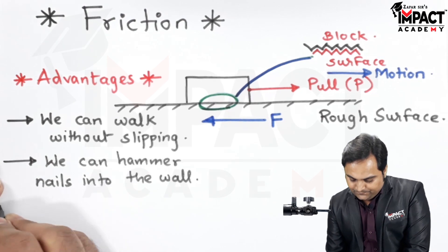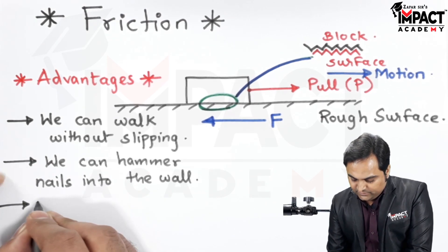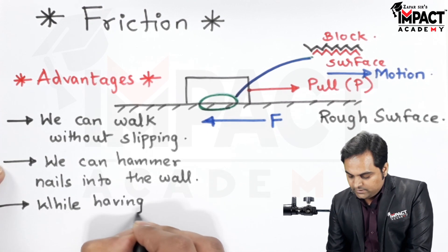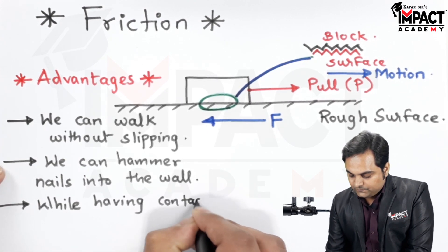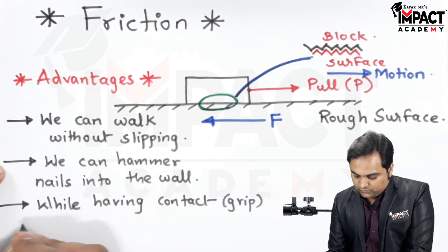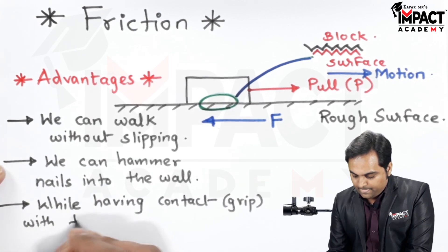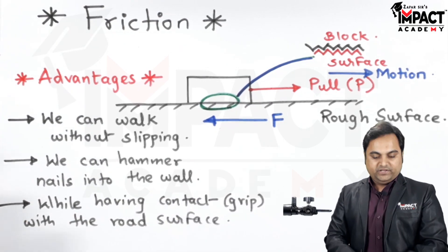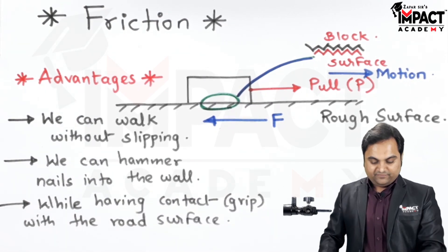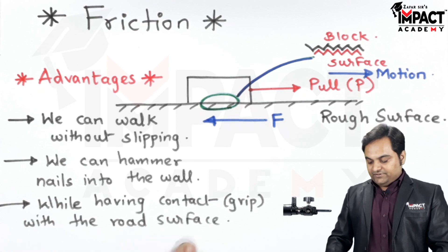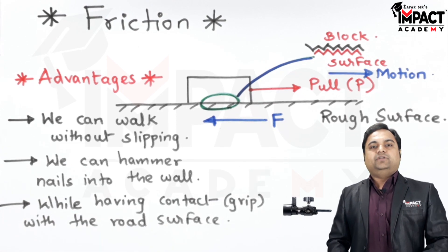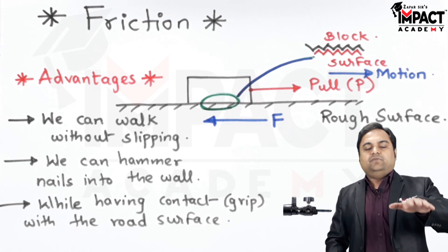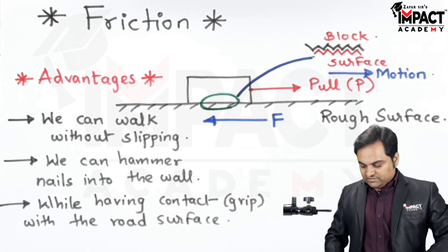Friction is even desired while having contact which is called as grip with the road surface. When the vehicle is moving onto the road surface there needs to be grip between the road surface, then only the vehicle can move properly otherwise it would be skidding.